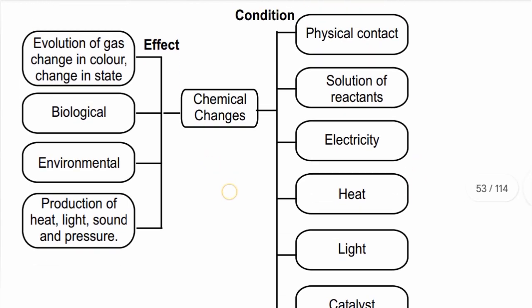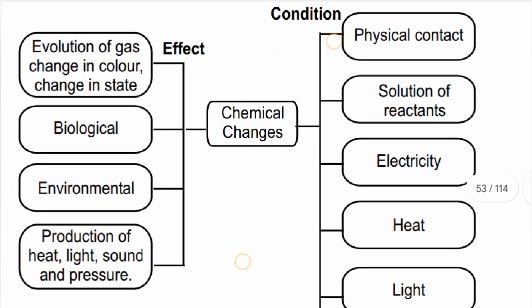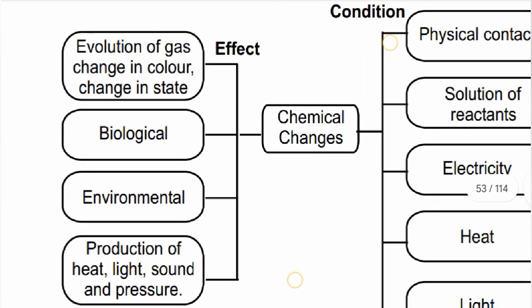The effects of chemical changes: evolution of gas, change in color, and change in state. Gas evolution, color change — these are important indicators of a chemical change.